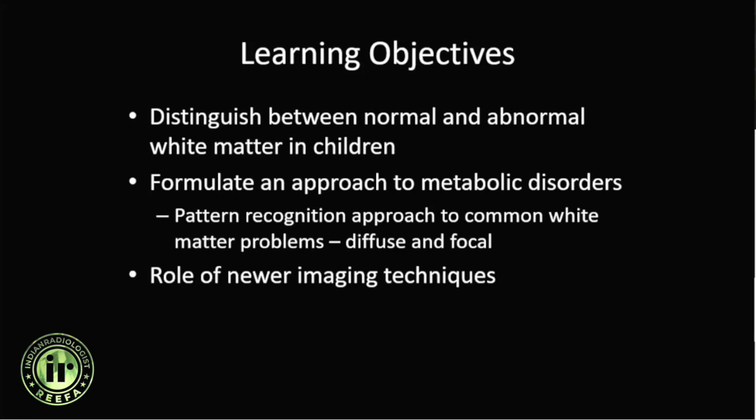In this presentation, we will first learn how to distinguish between normal and abnormal white matter in children, including how myelination develops. We will also formulate an approach to these metabolic disorders and briefly touch upon the role of newer imaging techniques. We may not be able to cover the theory behind every disorder, but we will try to cover it in a case-based manner.